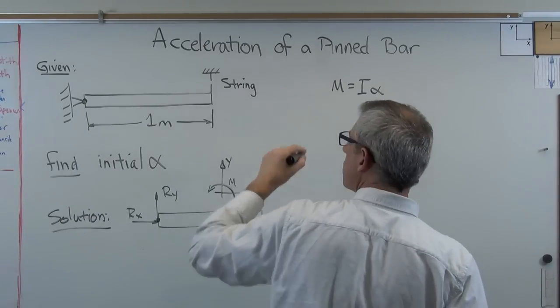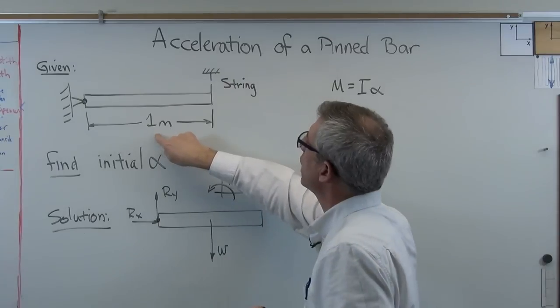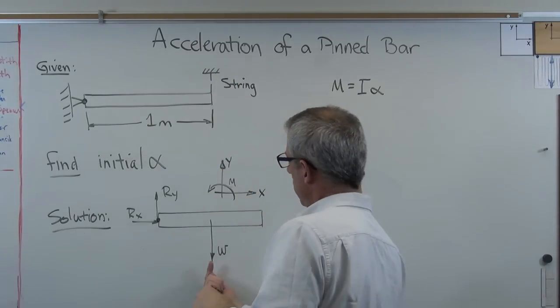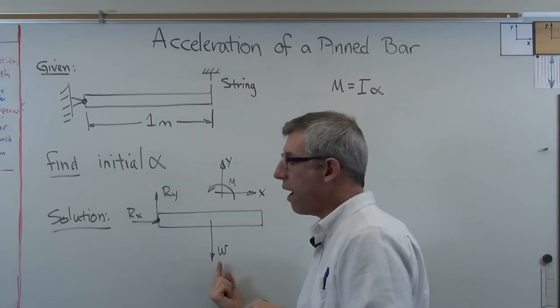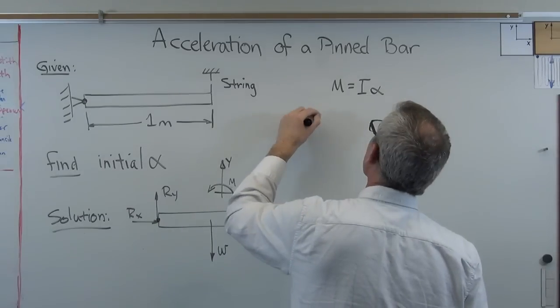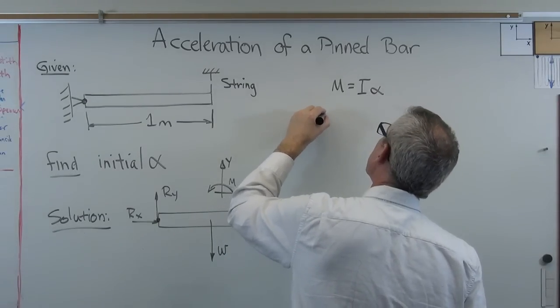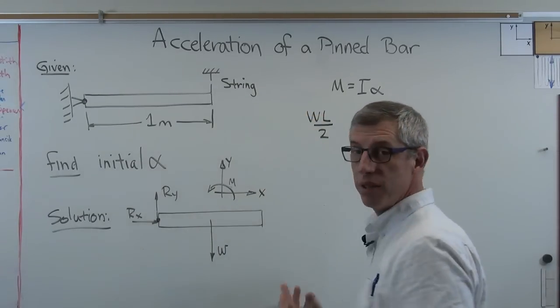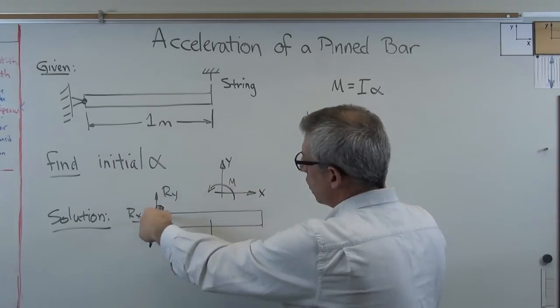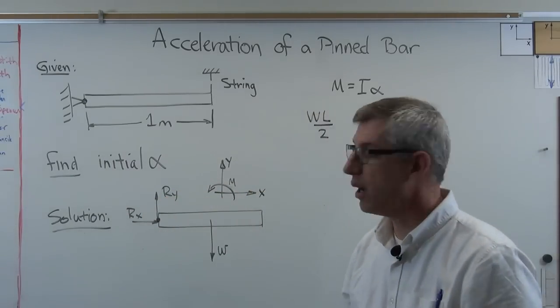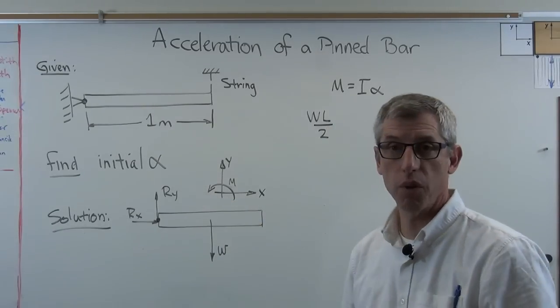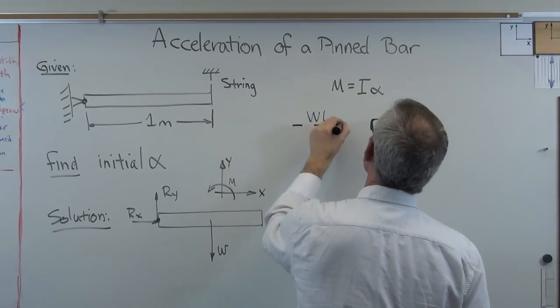So let's do that. Sum of the moments, I'm going to call this length for right now. And so I've got weight acting at half the length. So I've got weight times L over 2. Now, positive or negative? That weight is trying to rotate this bar in the clockwise direction, but I've got counterclockwise listed as positive. So I'll put that up there.